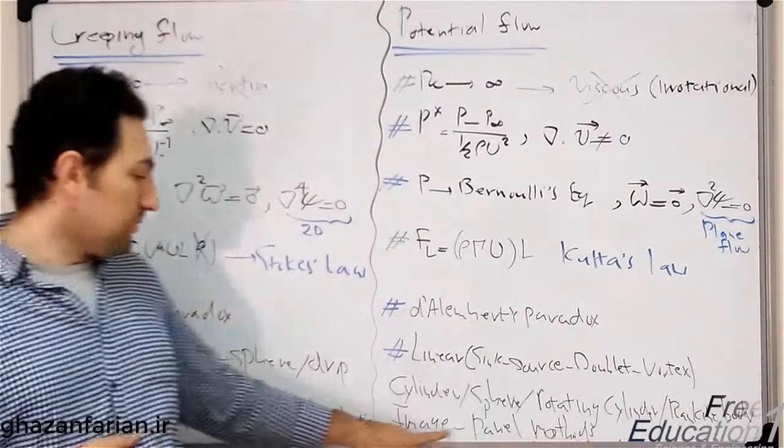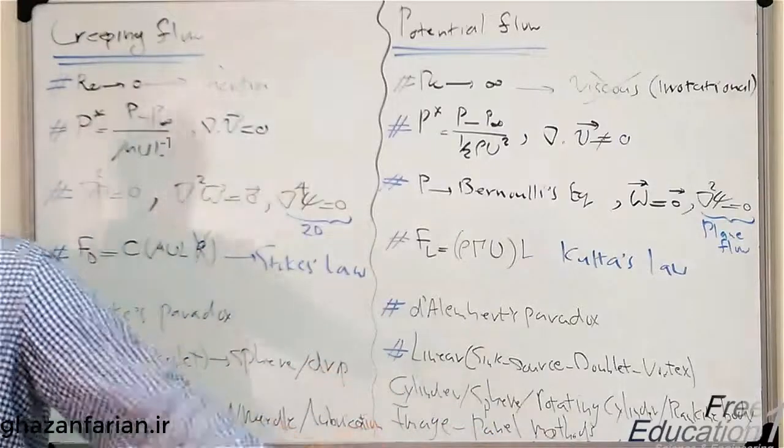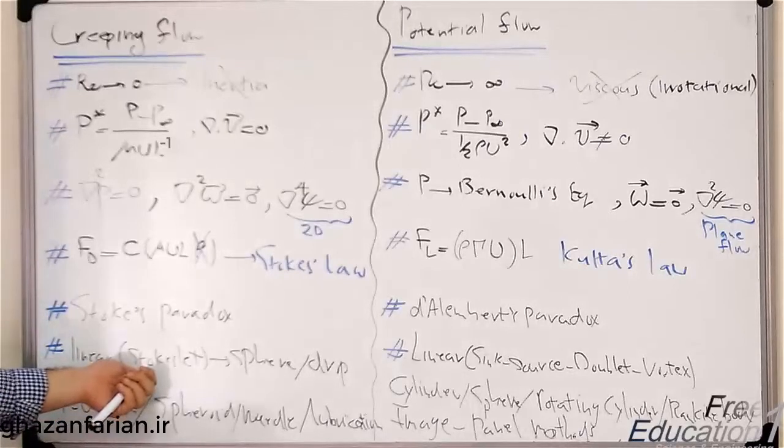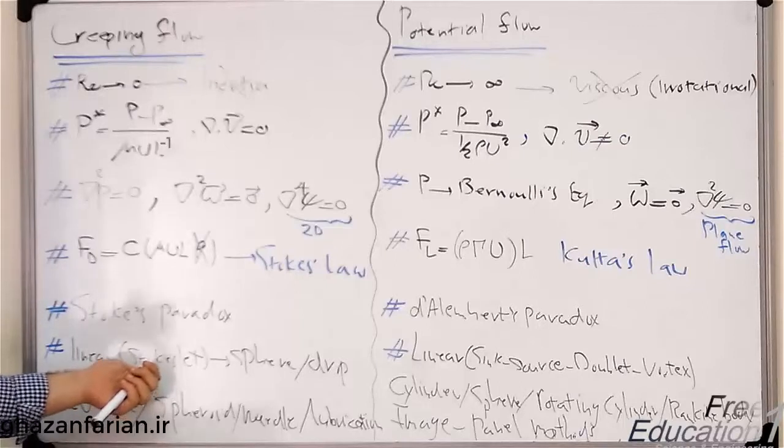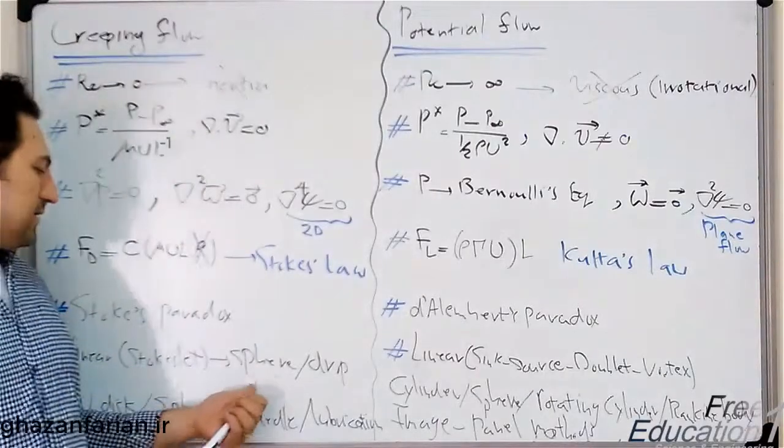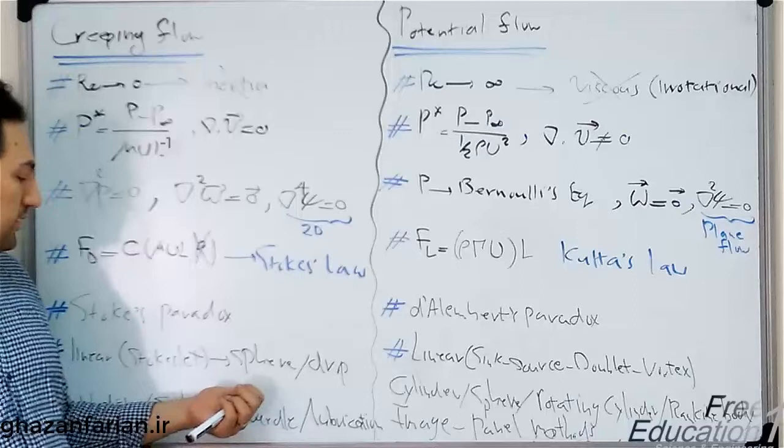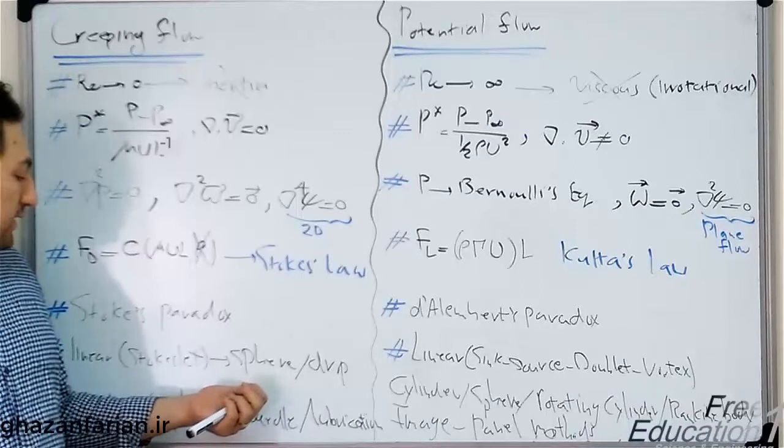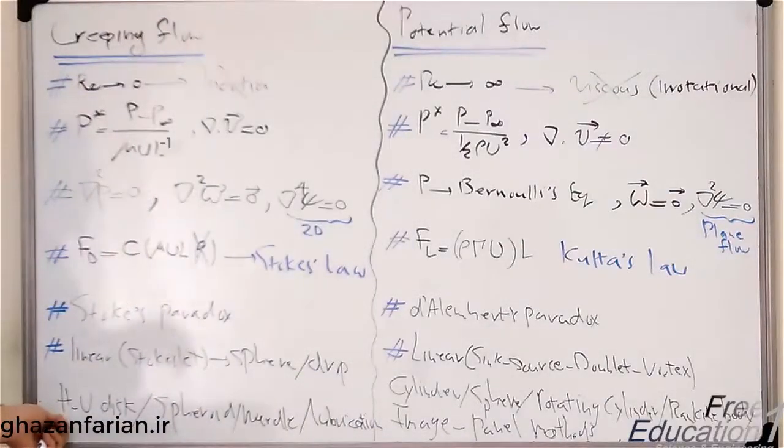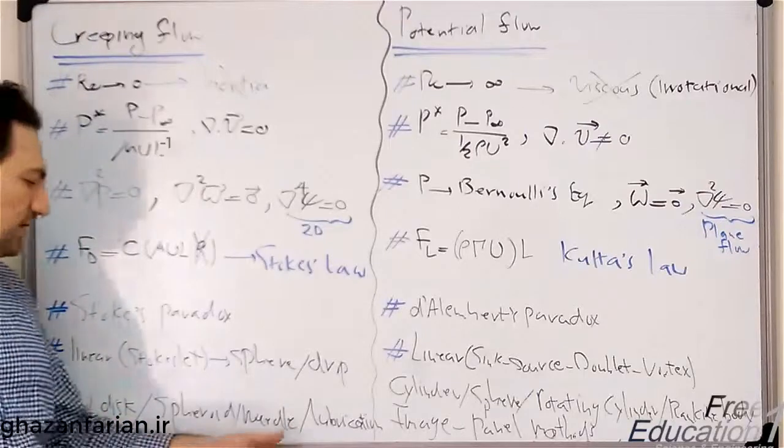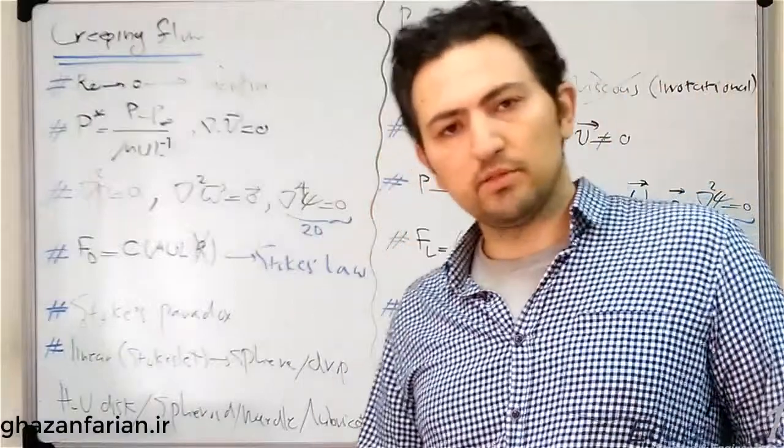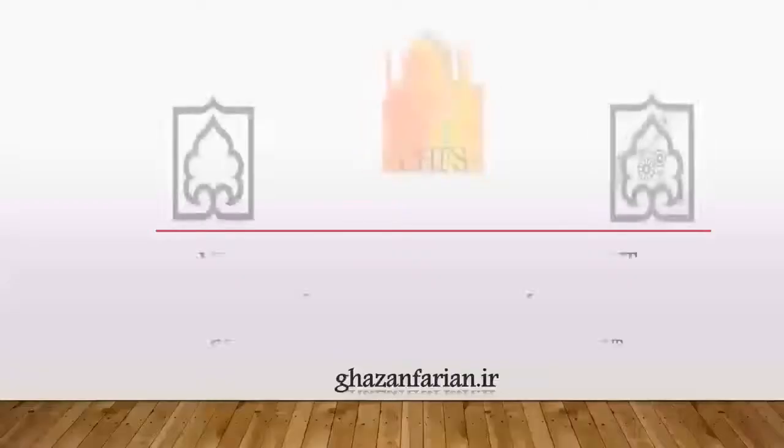The creeping flow is also linear. We have an elementary solution of the Stokes equation, which is the Navier-Stokes equation without the inertia term, which is called the Stokeslet. And the well-known solutions of the Stokes flow or the creeping flow are the Stokes flow over sphere or over droplets, over vertical or horizontal disc, asteroid needle, and the different solutions of the low Reynolds flow in internal flow applications, which is called the lubrication theory.